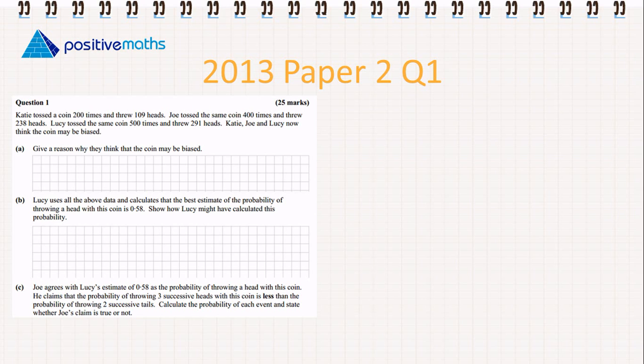Part A: Give a reason why they think the coin may be biased. Let's first outline some of the important details. For Katie, she tossed the coin 200 times,